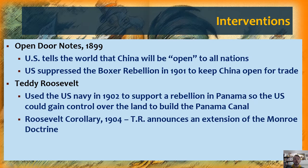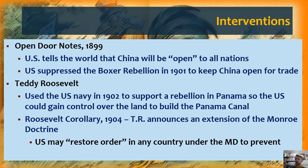Roosevelt also, two years later, announced an extension of the Monroe Doctrine called the Roosevelt Corollary. The Monroe Doctrine tells the world to stay out of the Western Hemisphere — the US will manage it. Roosevelt subtly changed that: in his extension, he put a new twist on the Monroe Doctrine to say that the US would preemptively restore order in any country under the Monroe Doctrine to make sure that country is not engaged in, as Roosevelt put it, chronic wrongdoing. So the US would not merely protect the Western Hemisphere — it would actually invade those countries in order to keep an order friendly to US economic interests.